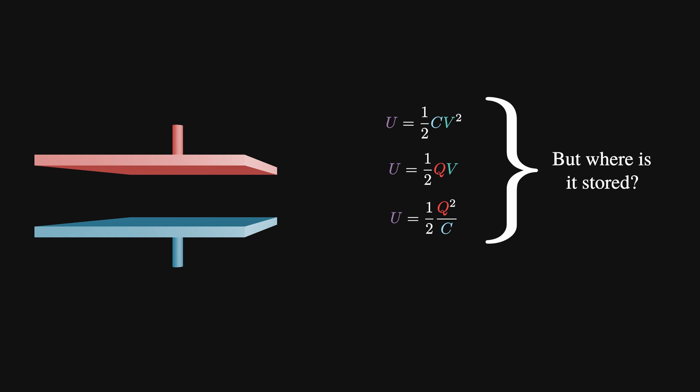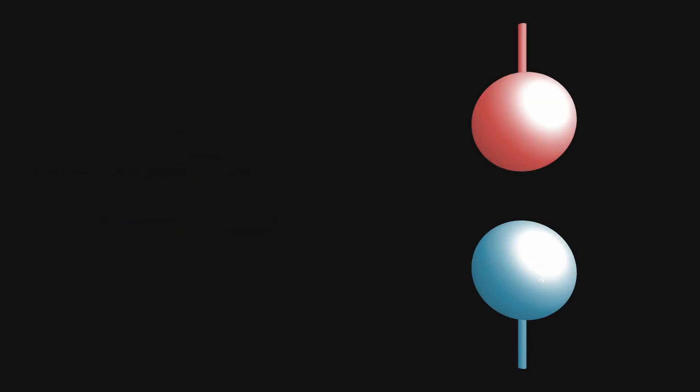You might assume that the energy just lies in the capacitor plates, as that's where the charge builds up. But this doesn't actually make any sense, because if we give two conductors the same amount of charge, then change their shape, the energy stored in the system would be completely different.